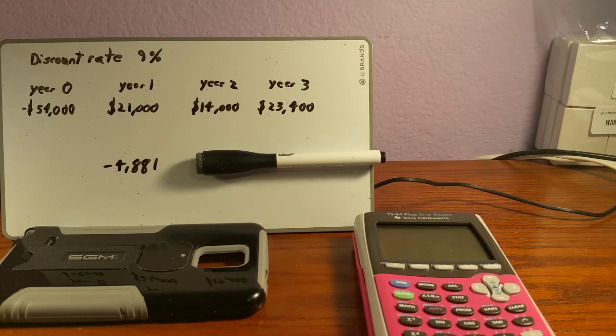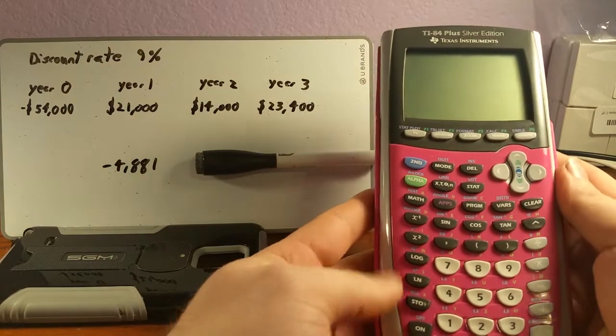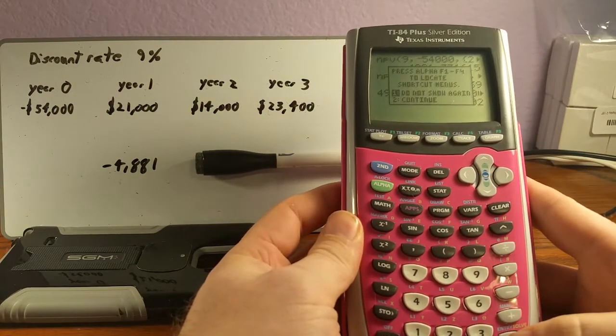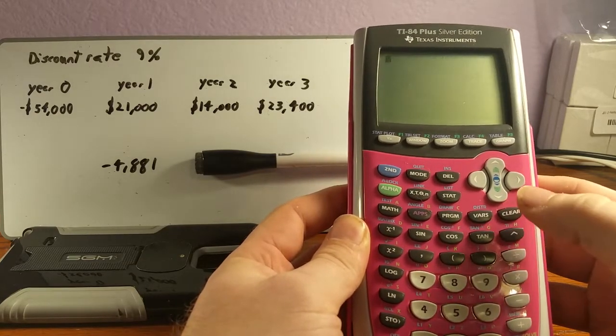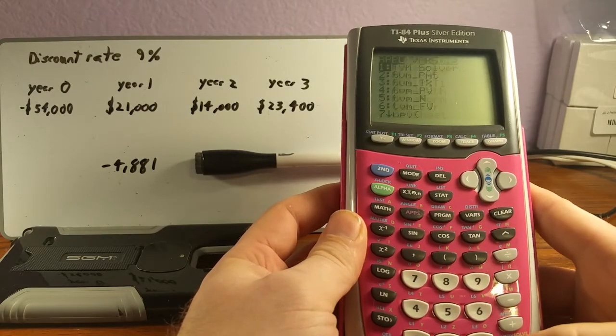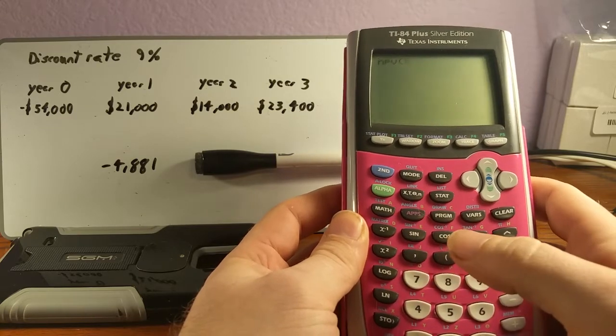So let's use the same problem. And the process is very similar to getting the net present value. So let's go ahead and turn our calculator on. And as you can see, we still have all of our stuff from yesterday. Let's go ahead and clear that out. So once again, we're going to go into the apps and go into the finance calculator and then go into net present value.